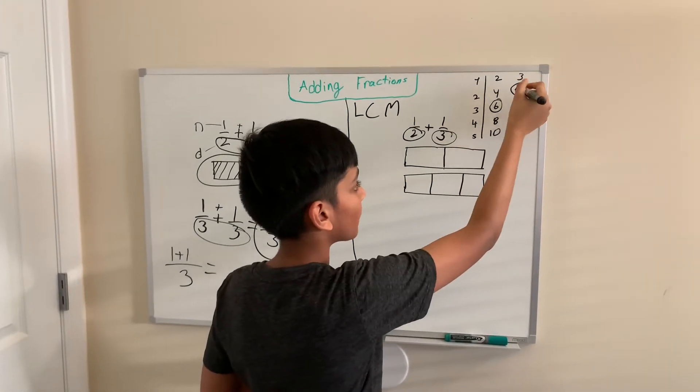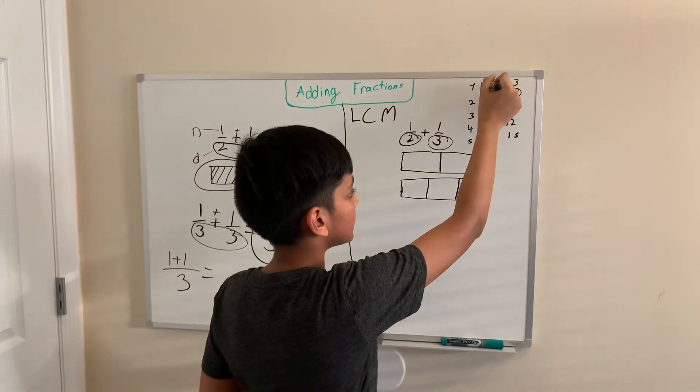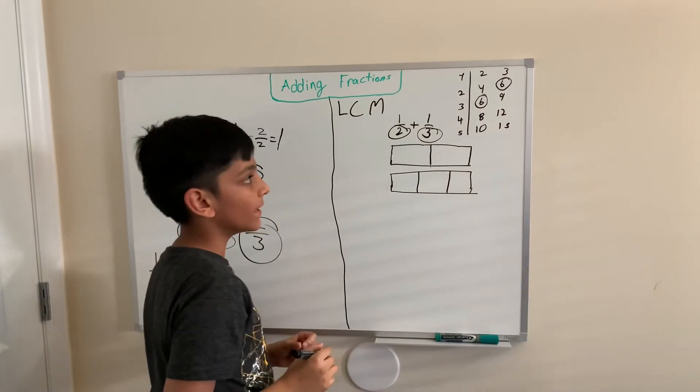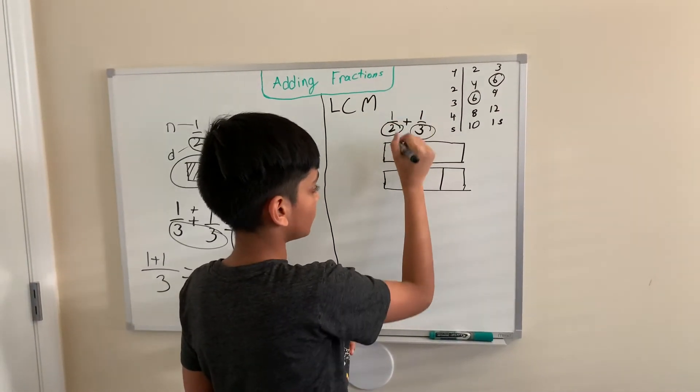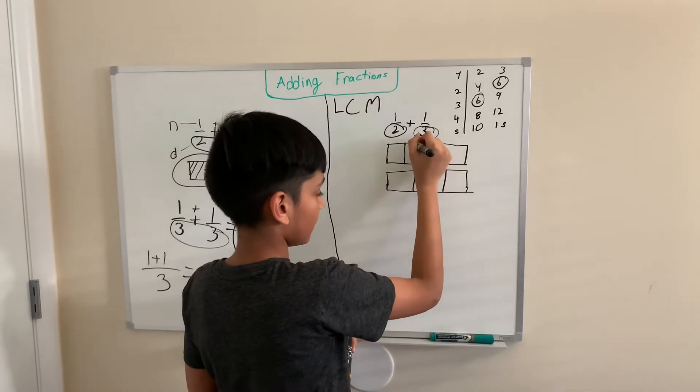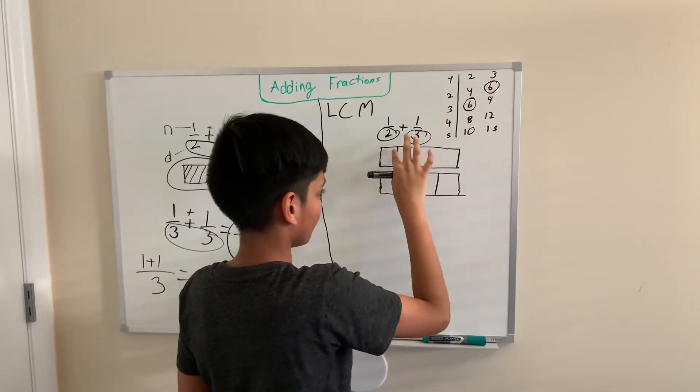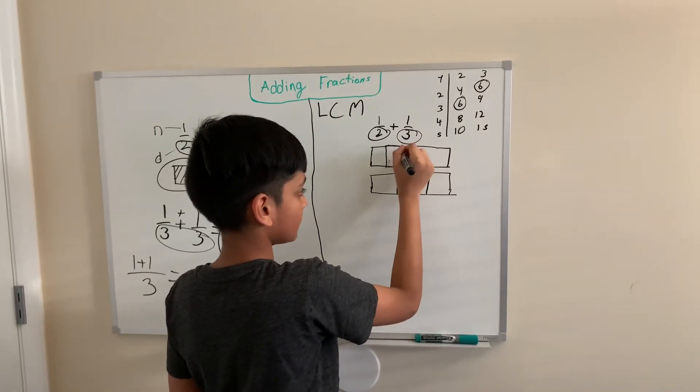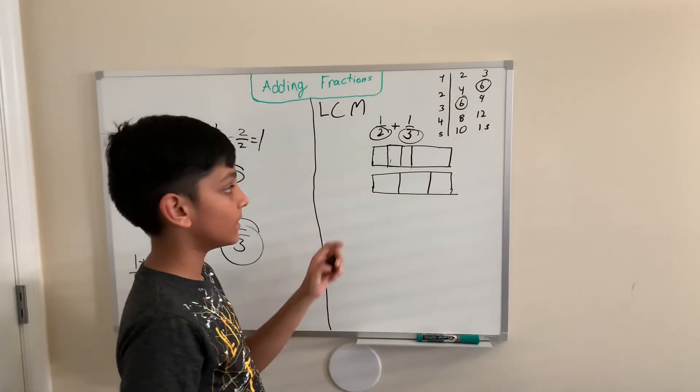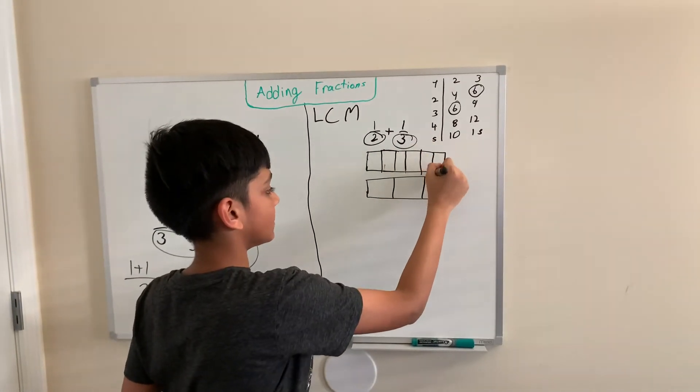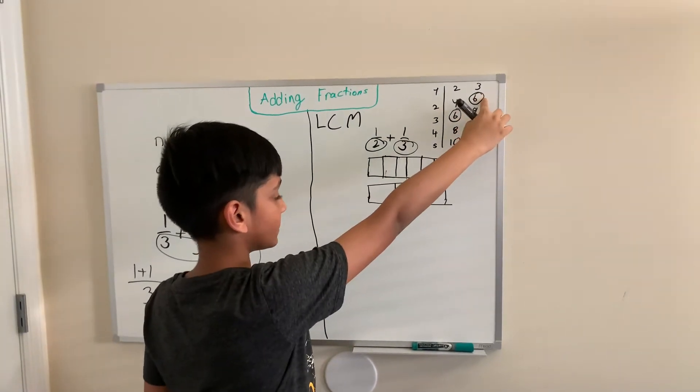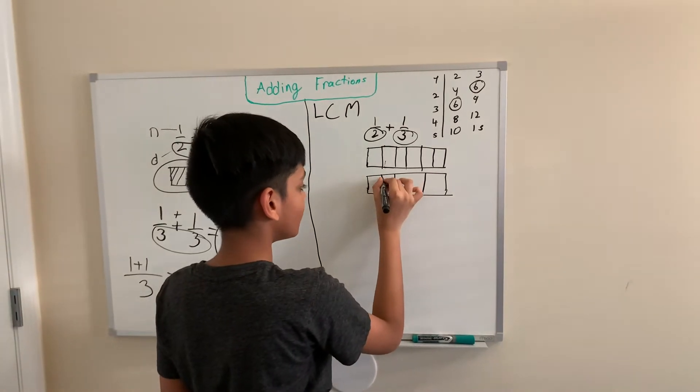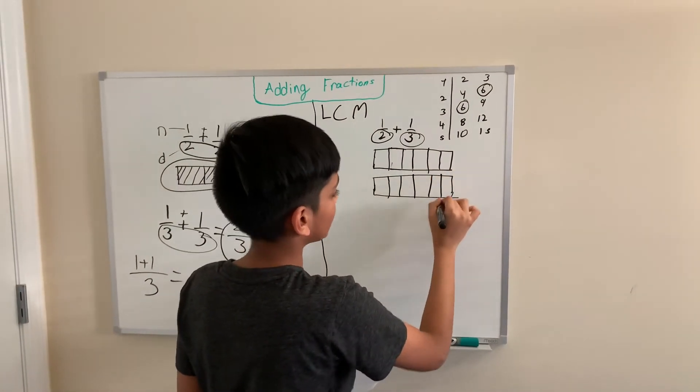Since 6 is on the third row for 2, we are going to have to multiply this by 3. We have to divide each half into 3 pieces. Since it's on the second row for 3, we're going to have to divide each third into 2 pieces. Look, exactly the same.